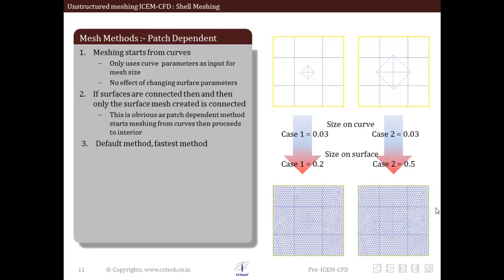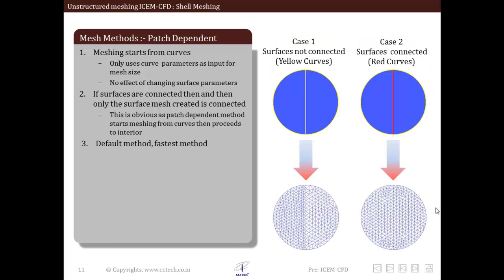The second important point is connected surfaces result in connected surface mesh. Observe that in case one, the diagonal curve is yellow which means that it is connected to only one surface. So two semicircular surfaces in case one are not connected.